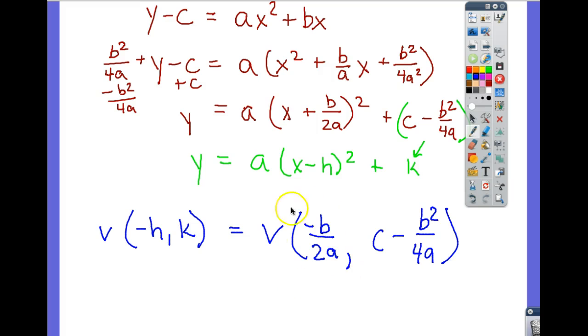And that's where this little formula comes from, negative b over 2a from standard form. It comes from completing the square to get to vertex form and taking the opposite of h, k.